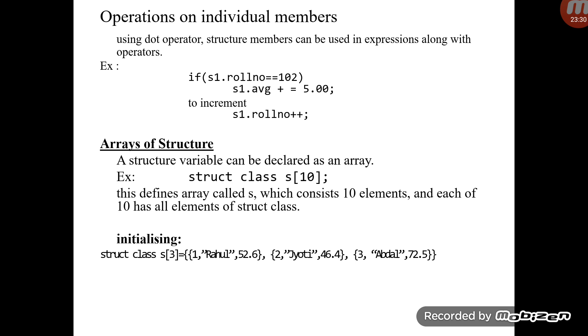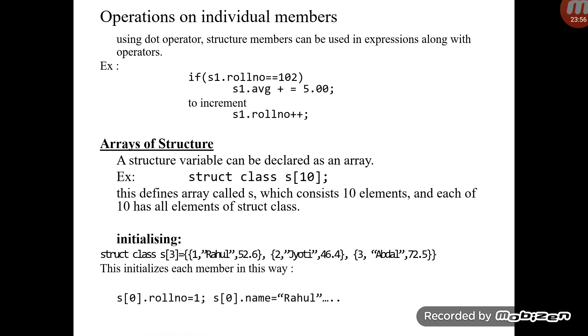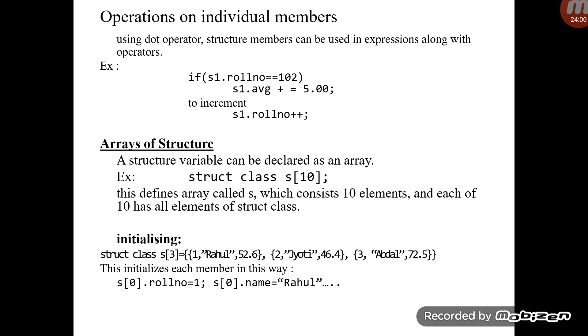To initialize an array of structures, you use nested curly braces. For example: `struct class s[3] = {{1, "Rahul", 52.6}, {2, ...}, {3, ...}};`. The first inner set initializes s[0] (roll number 1, name Rahul, average 52.6), the second set initializes s[1], and the third set initializes s[2]. The values are assigned to s[0].rollno, s[0].name, s[0].average, and so on for each element.